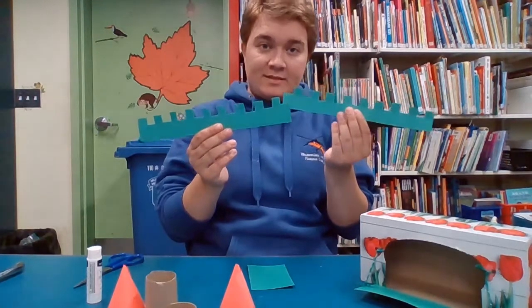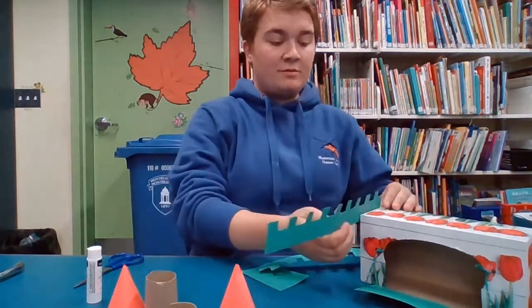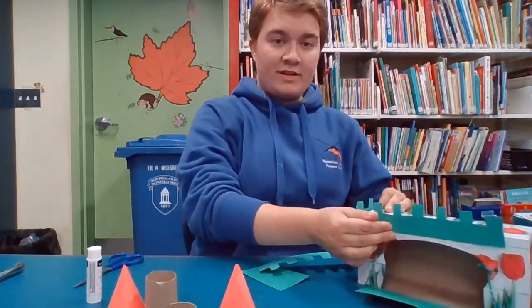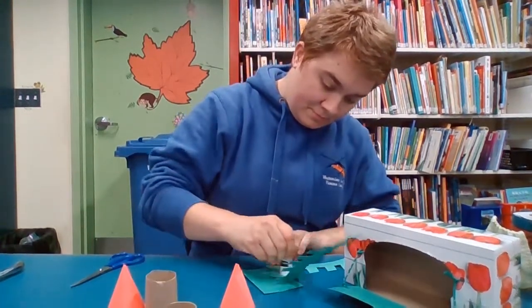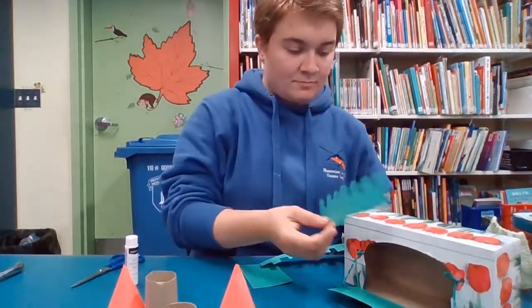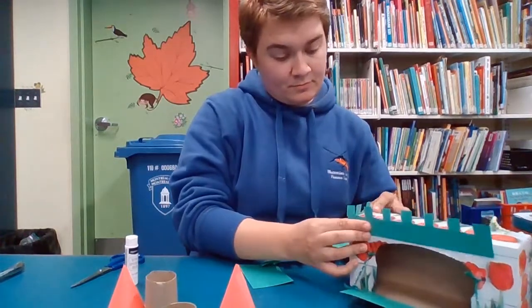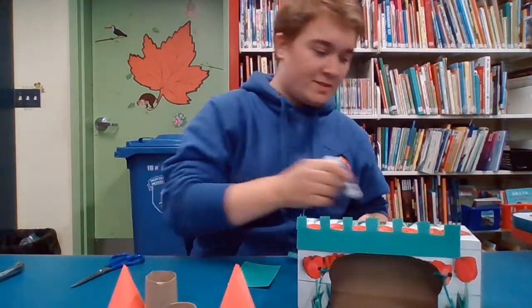So in the end you should have two pieces like this, and you can glue them around the top part of your castle. And then you do the same thing with the other piece.